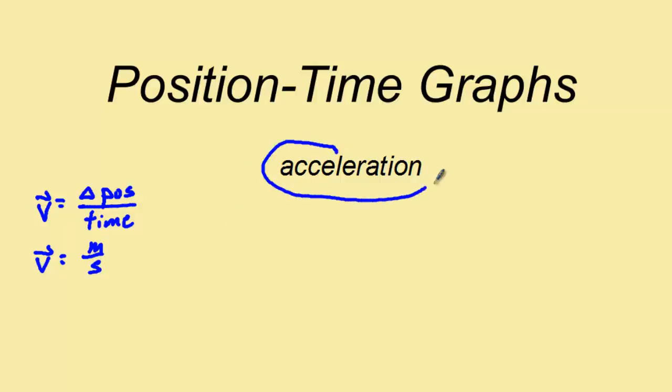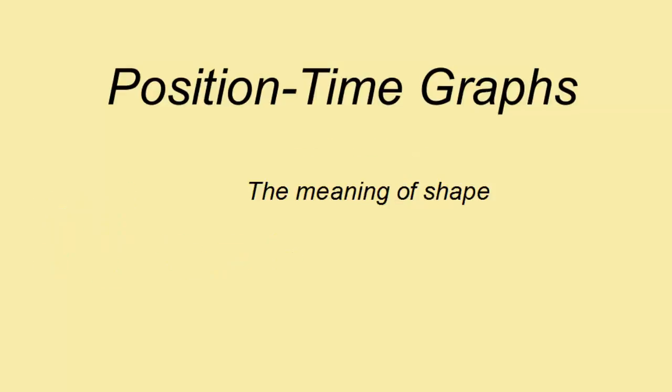In this video we're going to take a look at what it can tell us about acceleration. In a position-time graph we're looking at a rate of change in meters per second, but what about if this rate of change is changing over time? Well, meters per second per second is the same thing as meters per second squared, which is acceleration. So let's turn the page and take a look at what that could mean for us.